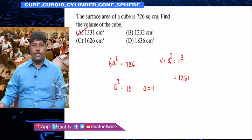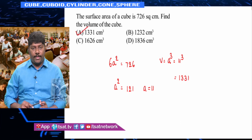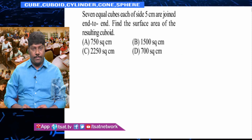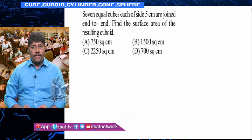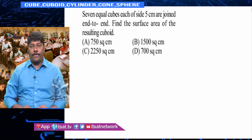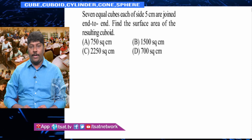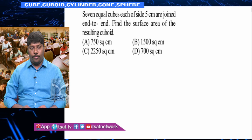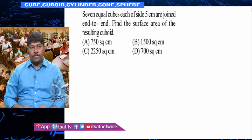So the answer is 1331. Look at the next one: 7 equal cubes of each side 5 cm are joined end to end. Find the surface area of the resulting cuboid.